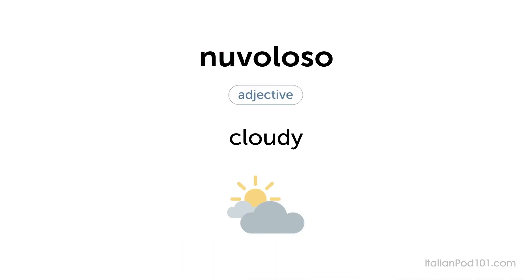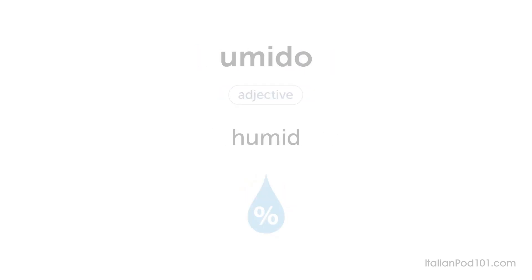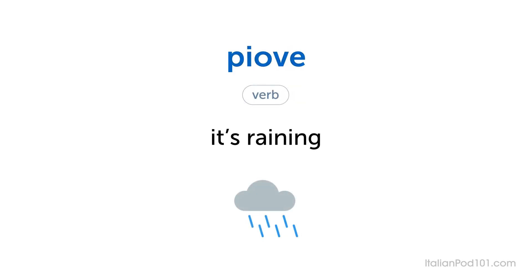Let's review the key words. Nuvoloso — cloudy. Nice weather. Humid. Piove — it's raining.